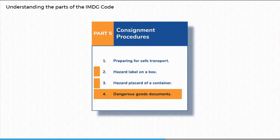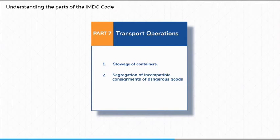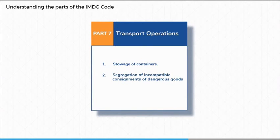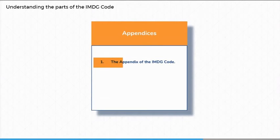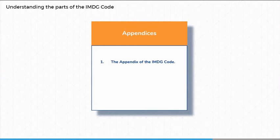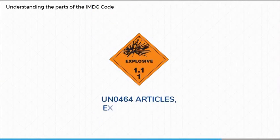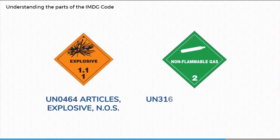Part 5 also explains the documentation requirements. Part 7 is concerned with stowage and segregation arrangements. This part provides details about how incompatible consignments of dangerous goods are segregated on container, ro-ro, and general cargo ships. The appendix lists the UN number and proper shipping names of more general substances that do not have a specific name. The IMDG code deals with these by naming them generally and adding the letters NOS, meaning not otherwise specified.